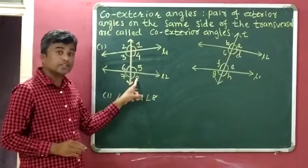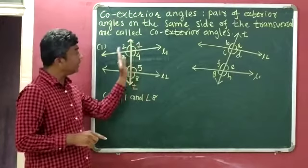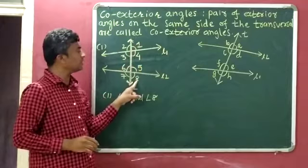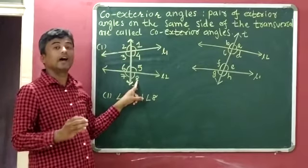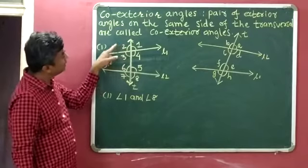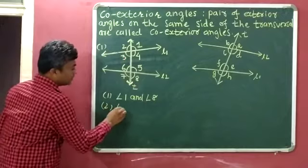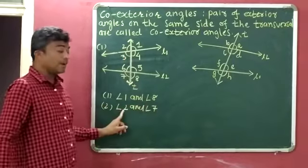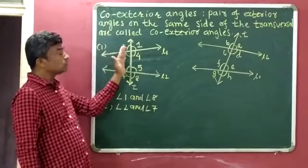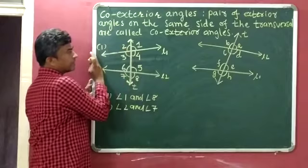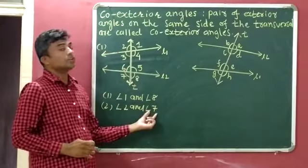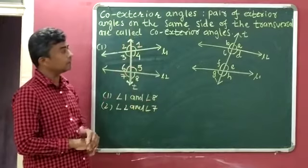Angle 1 and angle 8 are co-exterior angles because they are exterior angles and they lie on the same side of the transversal. This is the transversal — angle 1 and angle 8 are both available on its first side. On the second side of the transversal, the exterior angles are angle 2 and angle 7. So the second pair is angle 2 and angle 7. They are also co-exterior angles because they lie on the same side of the transversal.